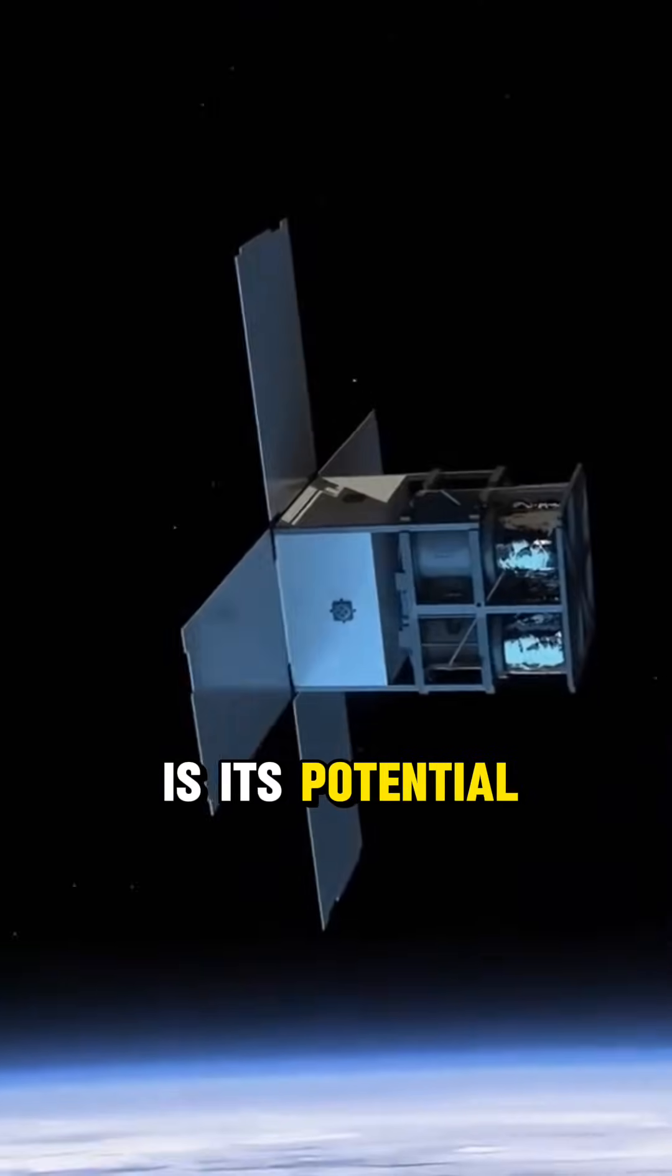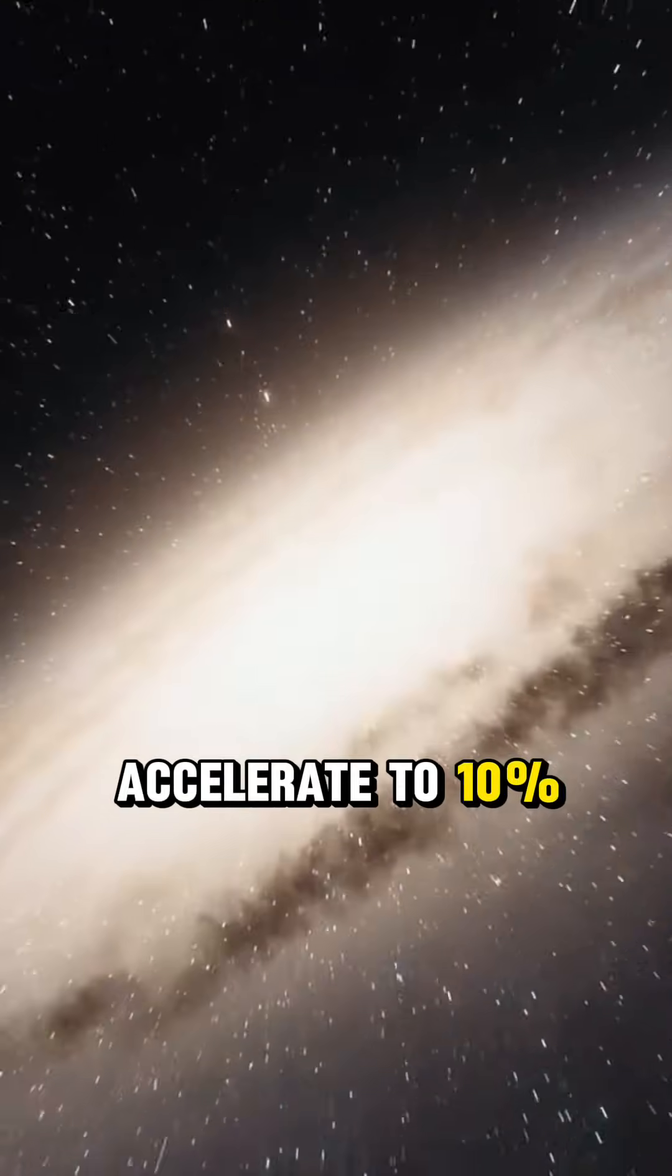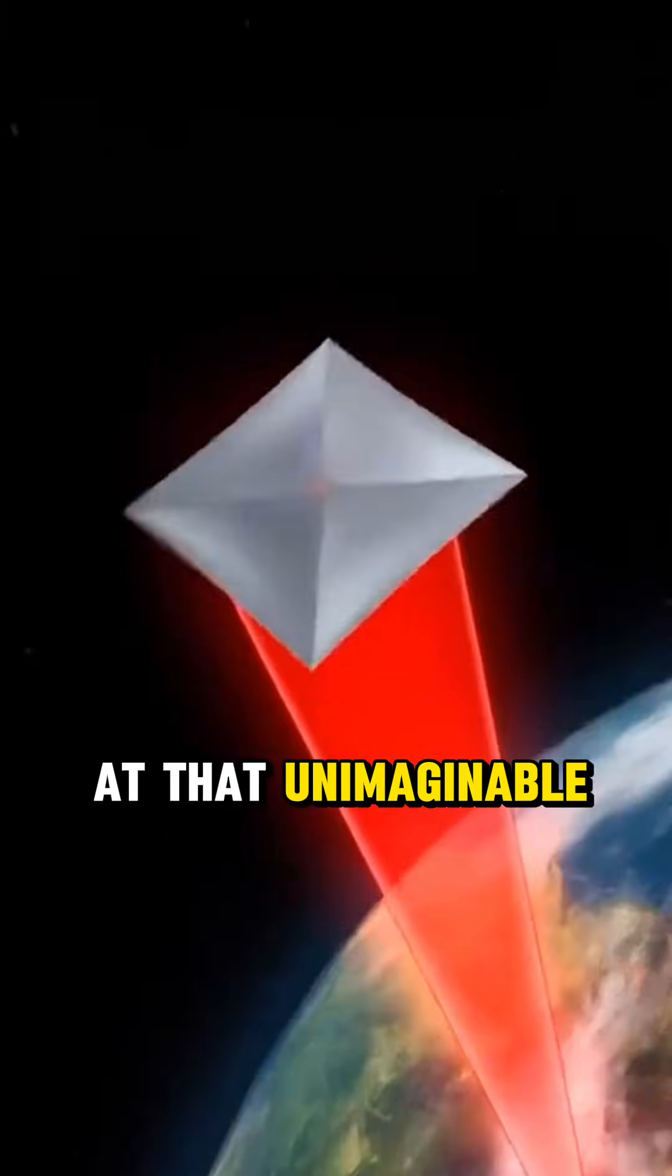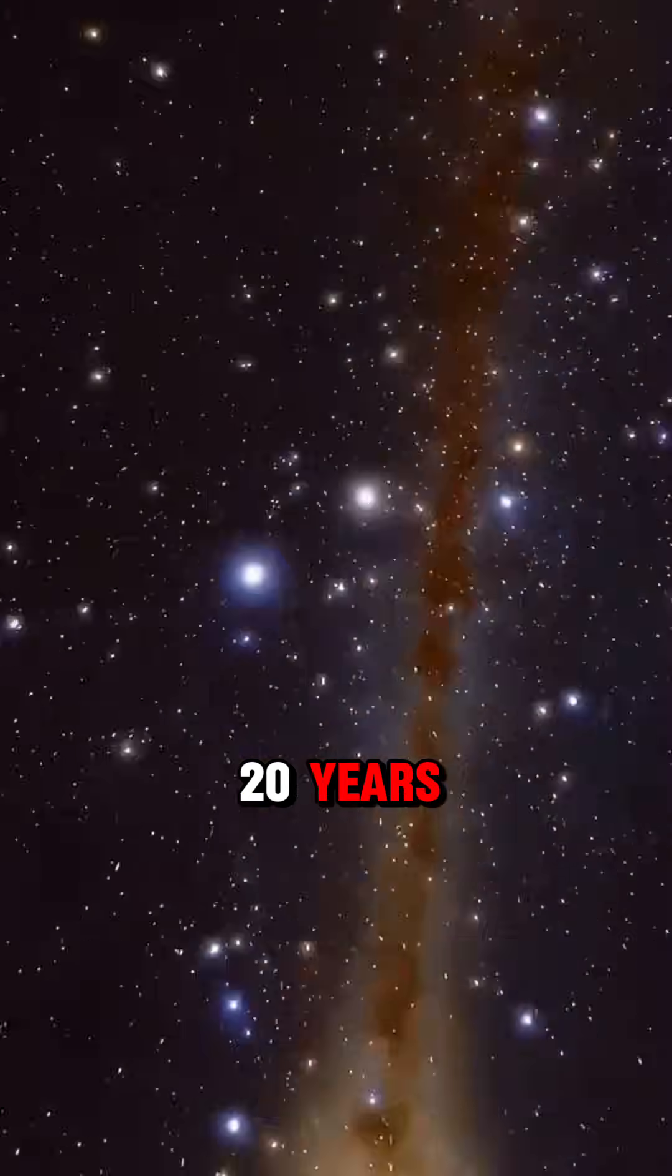What makes this idea truly astonishing is its potential. A solar sail could, in theory, accelerate to 10% the speed of light. At that unimaginable pace, the journey to Proxima Centauri would shrink from millennia to just 20 years.